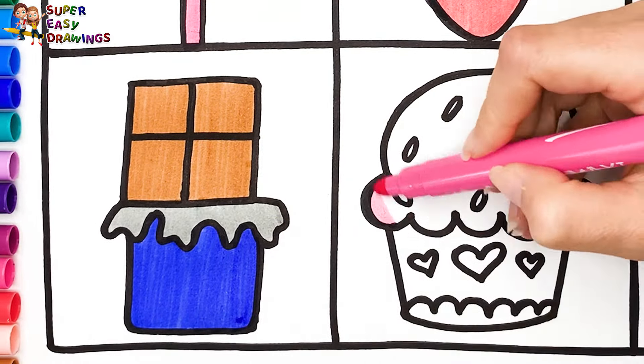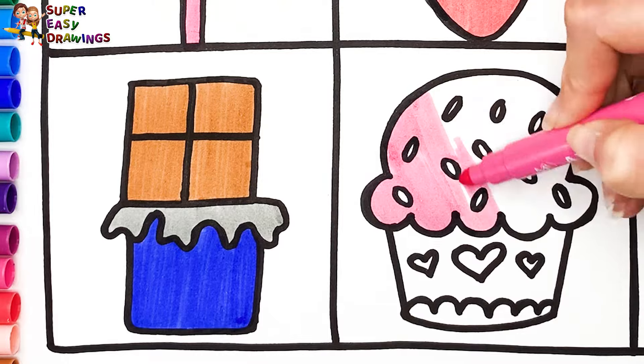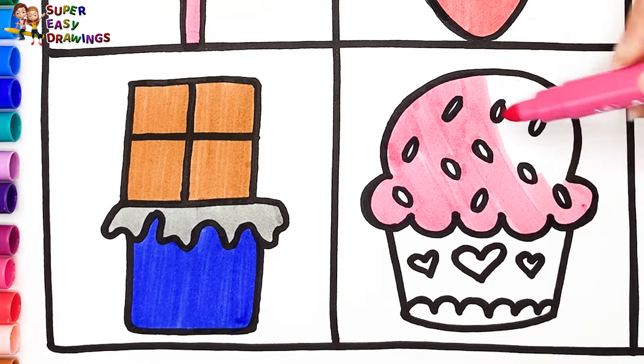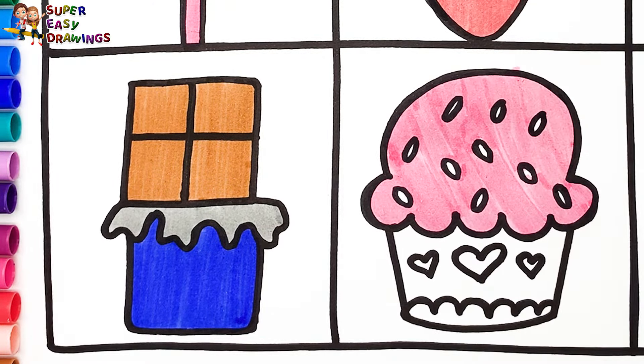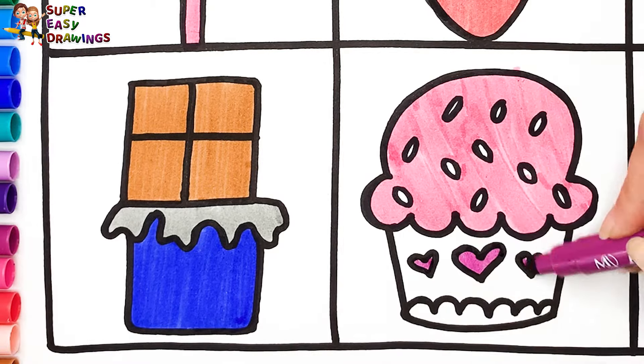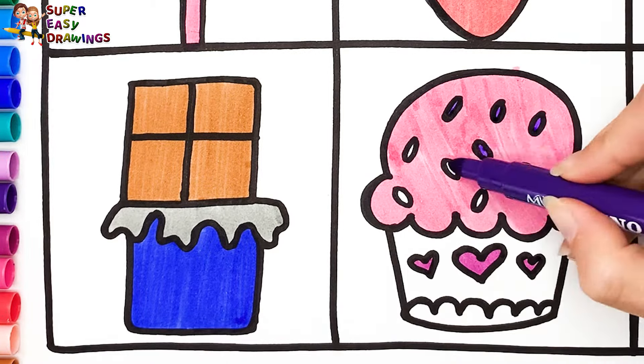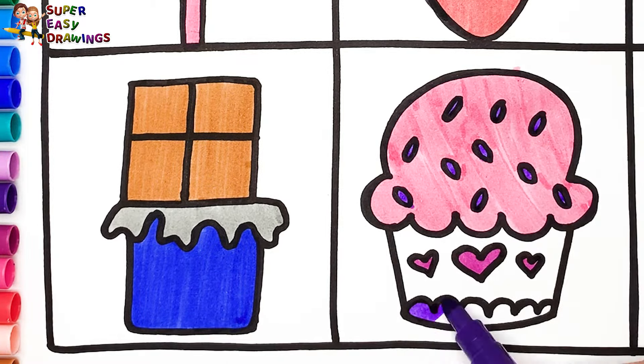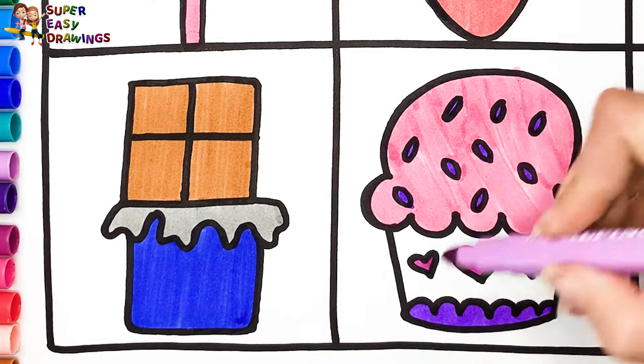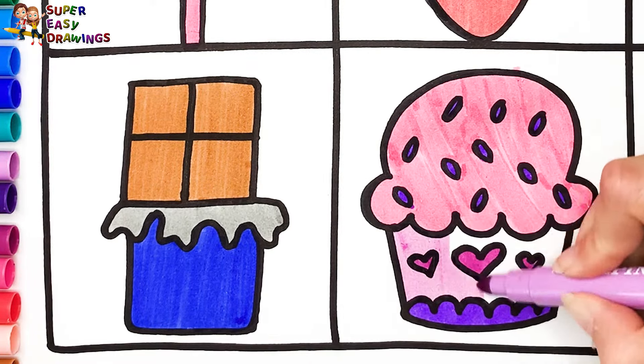For the cupcake, I use pink. Mauve for the hearts. Some purple here and here. And I color the rest with this light purple marker.